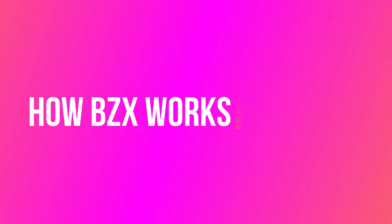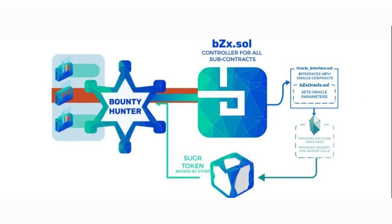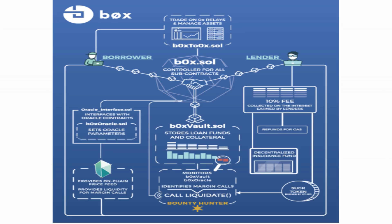How does B0X work? The B0X project has two layers: the protocol layer and the oracle layer. The protocol layer contains the B0X.sol and B0XVault.sol contracts, which control the order object logic, escrow of funds, and decentralized governance. The protocol layer is governed by B0X token holders to facilitate seamless and decentralized contract updates.